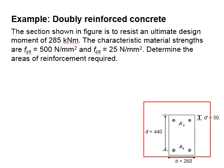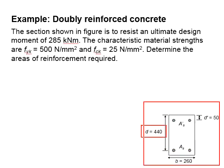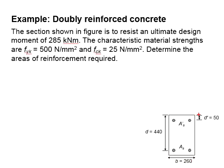The section has a depth d of 440 and width b of 260. The position of the compressed steel bar is equal to d' = 50 from the top of the beam. The area for the compressed steel bar is represented by AS' while the area for the tension steel bar is represented by AS.